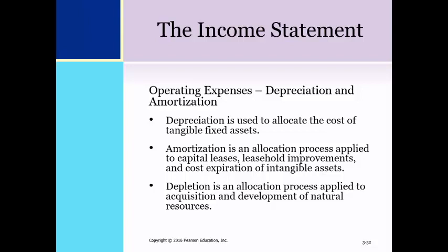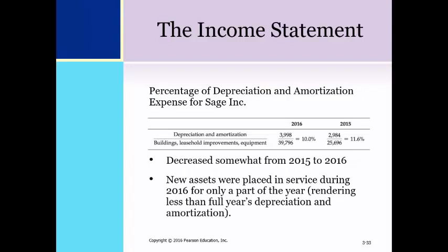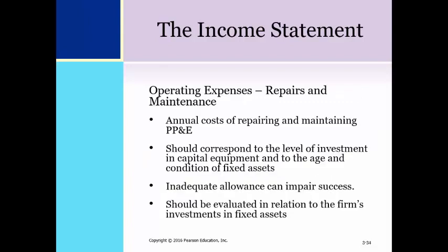The cost of acquiring and developing natural resources such as oil and gas, other minerals, and standing timber is allocated through depletion. This is an illustration of the calculation of the depreciation percentages for Sage Inc. for 2015 and 2016. The percentage of depreciation and amortization expense has decreased somewhat, possibly due to new assets placed in service during 2016 for only part of the year, rendering less than a full year's depreciation. Repairs and maintenance represent the annual cost of repairing and maintaining the firm's property, plant, and equipment. Similar to research and development and advertising expenses, inadequate allowance for repair and maintenance can impair the ongoing success of an organization.